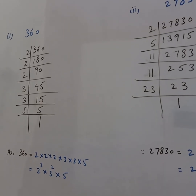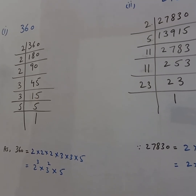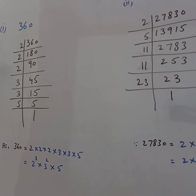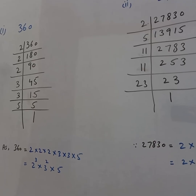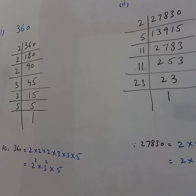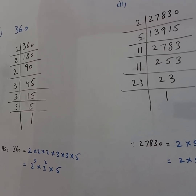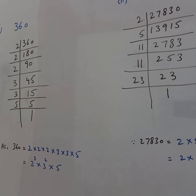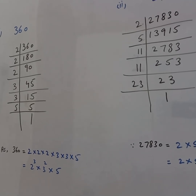Since 360 is equal to 2 × 2 × 2 × 3 × 3 × 5, which is equal to 2 raised to the power 3, multiplied by 3 raised to the power 2, multiplied by 5. These are the prime factors of 360.